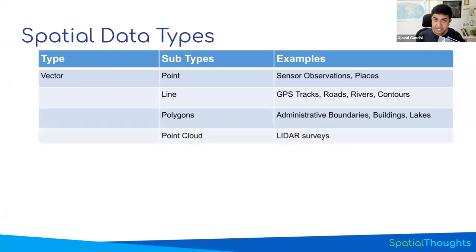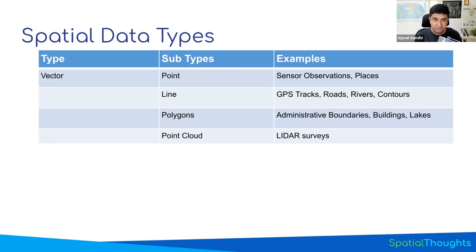There is a newer category of vector data called point clouds. These are dense point observations where you have X, Y, and Z positions. They are typically the result of LiDAR surveys or photogrammetry outputs. These are typically very dense — even a small region can have millions or billions of point observations. So we need specific data formats and processing techniques to represent them. Even though they are points with X, Y, Z coordinates, they are represented using a slightly different method, and those are called point clouds.